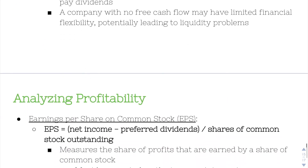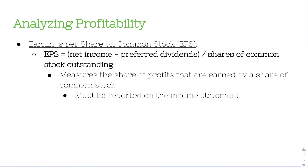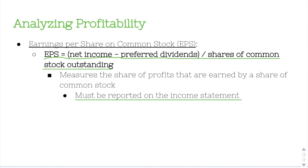Moving on to profitability: a really common metric is earnings per share (EPS), calculated as net income minus preferred dividends, divided by the shares of common stock outstanding. We subtract preferred dividends because those are not attributed to common stockholders. EPS measures the share of profits earned by a share of common stock. It must be reported on the income statement — you'll usually see it below net income. It's a really important metric, and we often look at EPS growth over time.